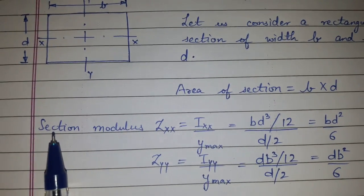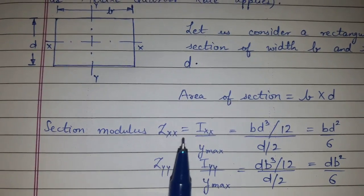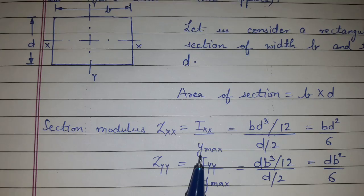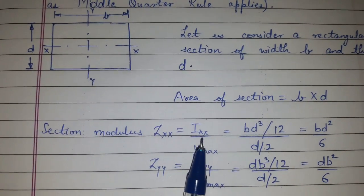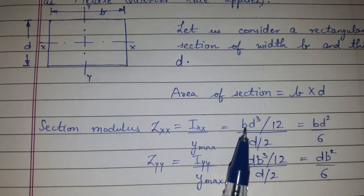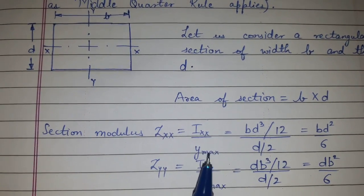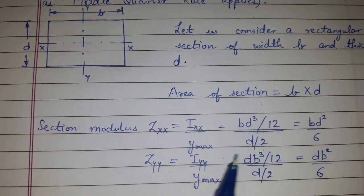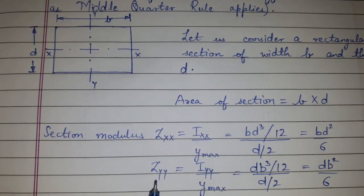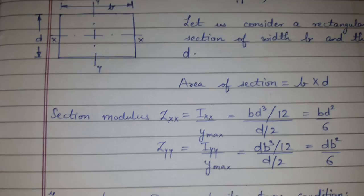We know section modulus zxx is equal to ixx upon y max. So ixx for a rectangular section is bd³/12, and y max will be d/2. So we get bd²/6. And zyy will be db²/6.